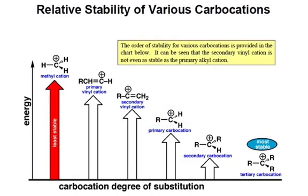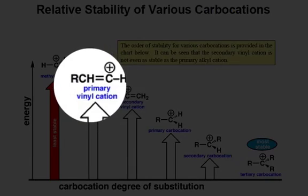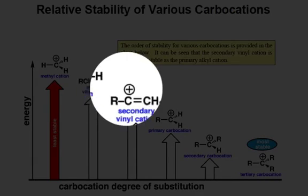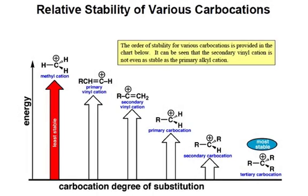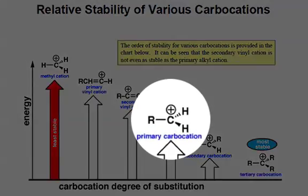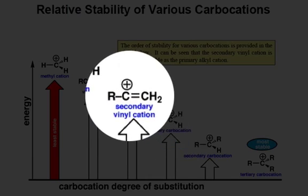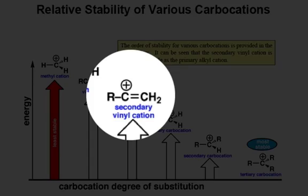Taking a closer look at both the secondary and primary vinyl cations, we can see that both have only two electron pair domains and will therefore be sp hybridized. Returning to our charge stability trends, sp hybridized cations are the least stable. In fact, a less substituted primary carbocation that is sp2 hybridized is more stable than the more substituted sp hybridized cation seen here.